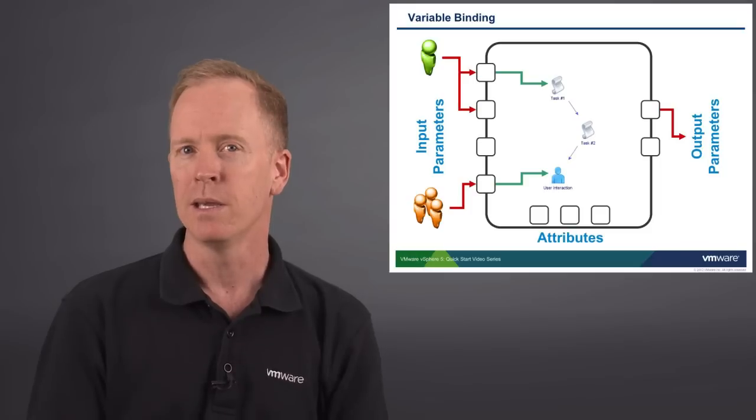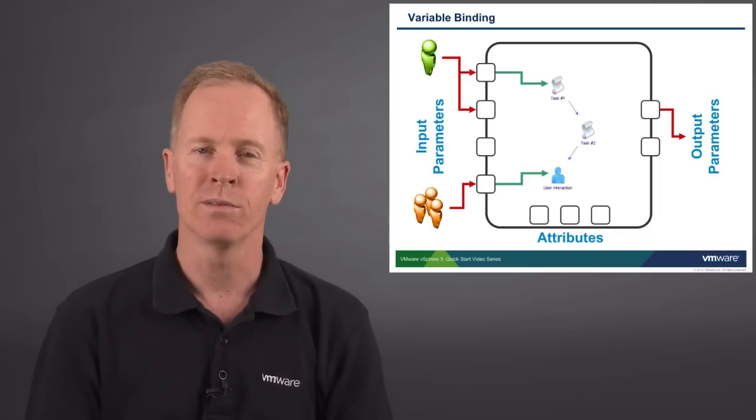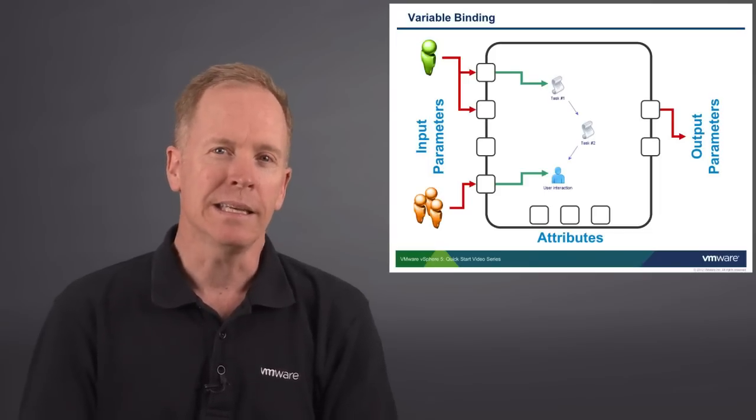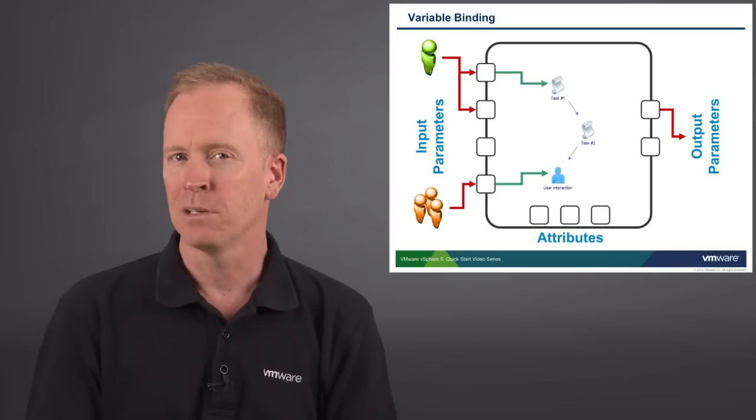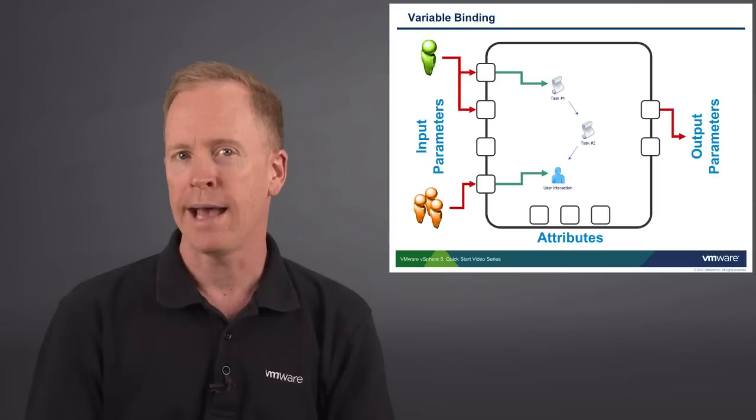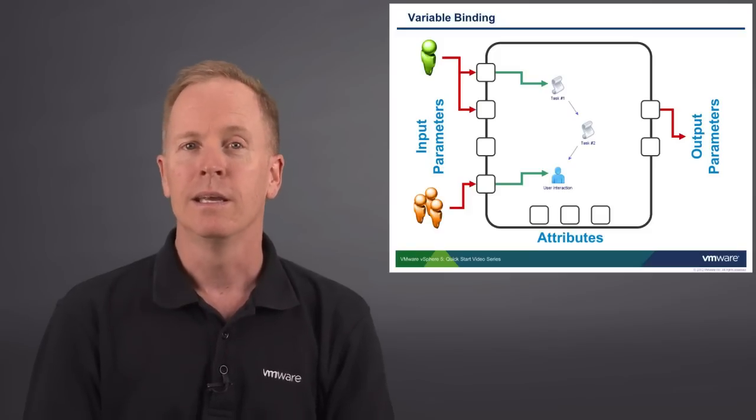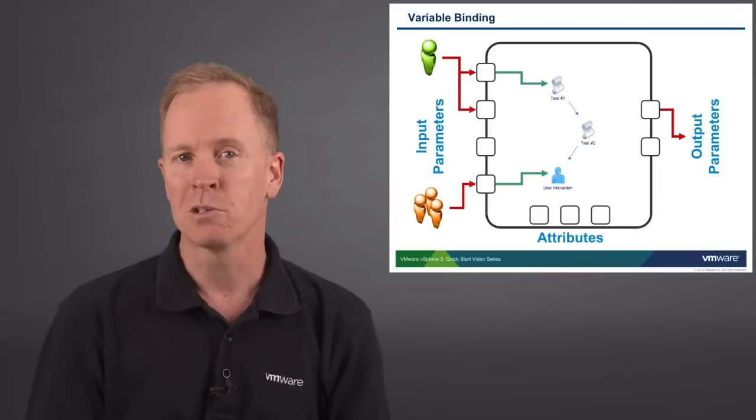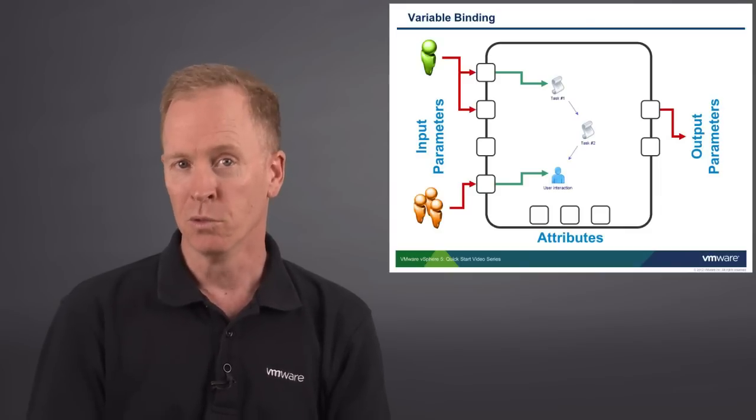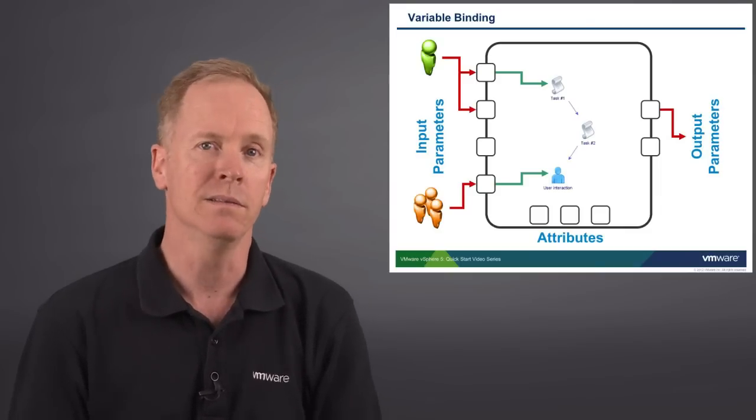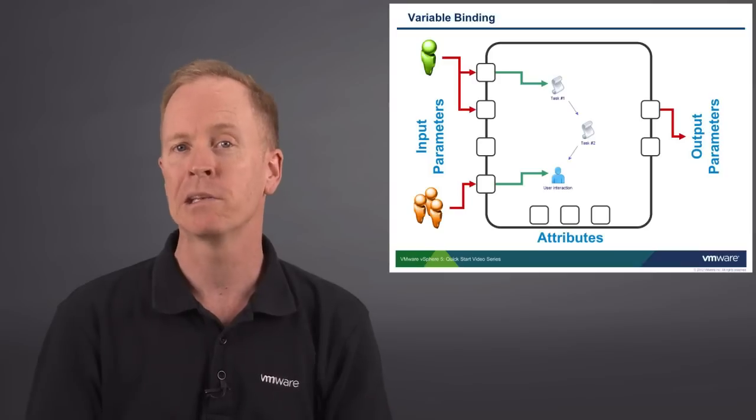We can send a message to a group of approvers, which we're illustrating with the little orange people in the lower left-hand corner of this slide. We can send a user interaction message to a group of approvers asking them whether or not to approve this request. The user wants a virtual machine that has more than one virtual CPU. Do we want to allow this or not?